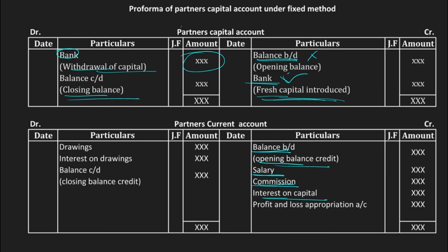Next is interest on capital — this is the interest on the capital the partner has invested, so the firm pays this to the partner and it is credited here. Don't confuse interest on capital with interest on drawings — interest on capital is paid by the company to the partner, but interest on drawings is paid by the partner to the company. If any profit or loss appropriation is done, that is also entered on the credit side. On the debit side, drawings are recorded — drawing means using funds for personal purposes — and interest on drawings is also recorded on the debit side.